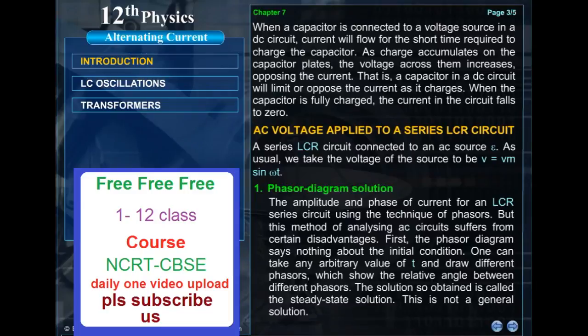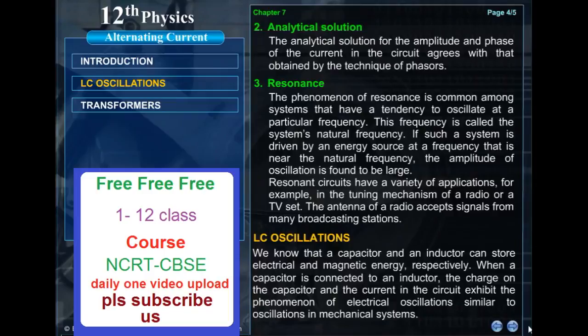Phasor diagram solution. The amplitude and phase of current for an LCR series circuit using the technique of phasors. But this method of analyzing AC circuits suffers from certain disadvantages. First, the phasor diagram says nothing about the initial condition. One can take any arbitrary value of T and draw different phasors which show the relative angle between different phasors. The solution so obtained is called the steady state solution. This is not a general solution.